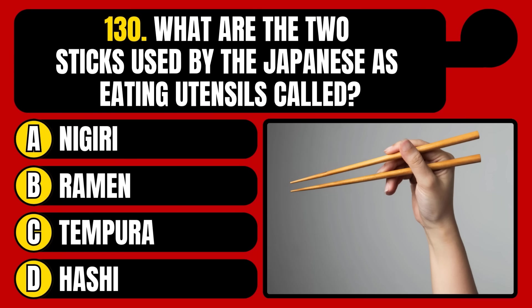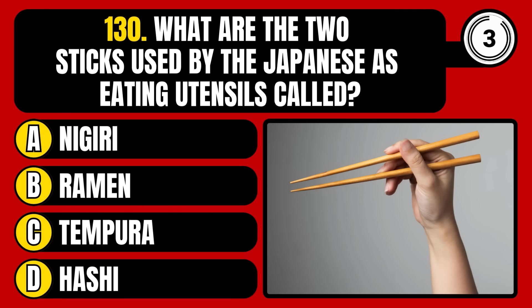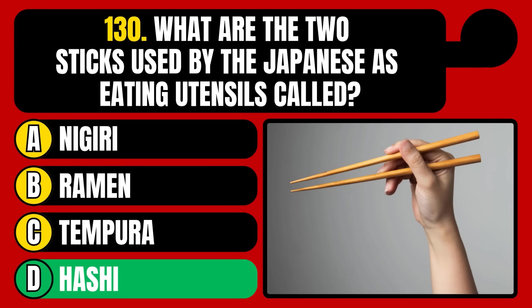What are the two sticks used by the Japanese as eating utensils called? Nijirai, ramen, tempura, or hashi? The correct answer is option D, hashi.